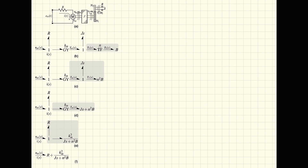In this problem we are seeking a transfer function that relates the output torque to the input voltage. The transfer function we seek is T2 over En, where T2 represents the Laplace transform of the torque tau2 in the time domain. Our strategy is to relate the second torque to the first torque, then use the one junction as an effort divider to relate the first torque to the motor torque, then relate the motor torque through the ideal motor, or the gyrator, to the current, and the current to the input voltage.